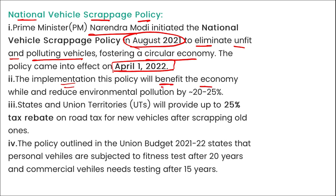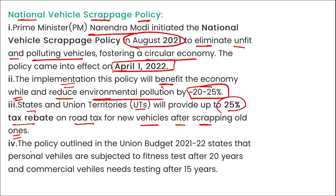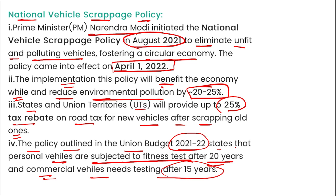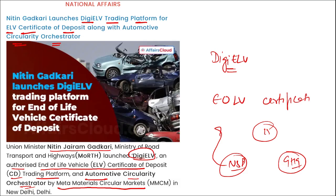The National Vehicle Scrapping Policy was launched by Prime Minister Narendra Modi in August 2021 to eliminate unfit and polluting vehicles, fostering a circular economy. The policy came into effect on 1st April 2022. Its implementation will reduce environmental pollution by 20–25%. States and UTs will provide up to 25% tax rebate on road tax for new vehicles after scrapping old ones. The policy, outlined in the Union Budget of 2021–22, states that personal vehicles are subjected to fitness tests after 20 years.